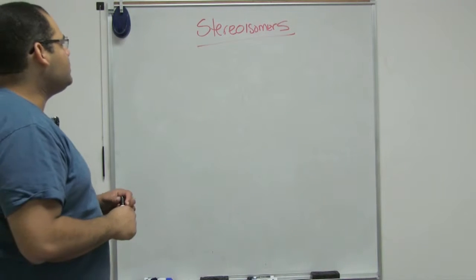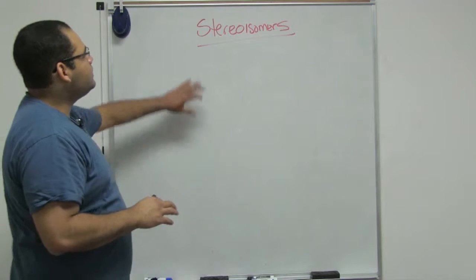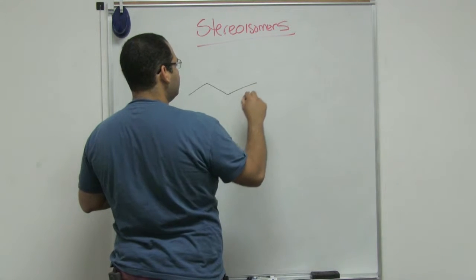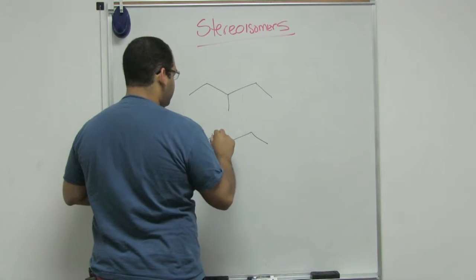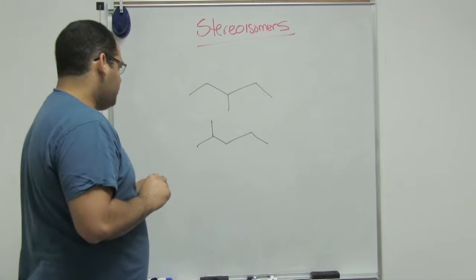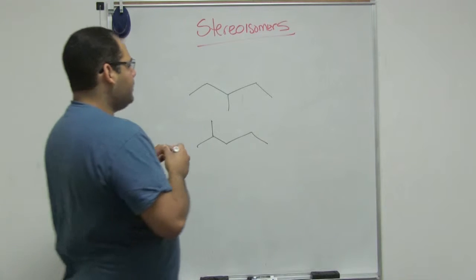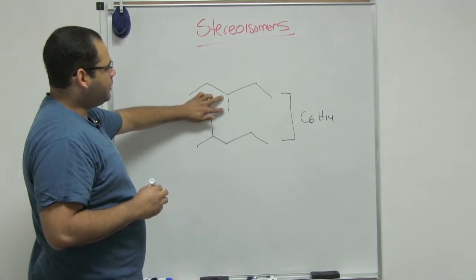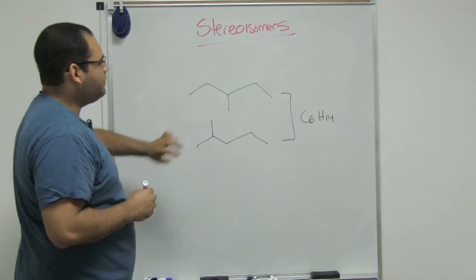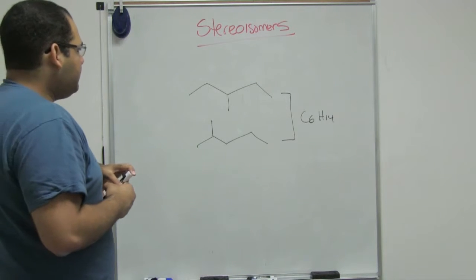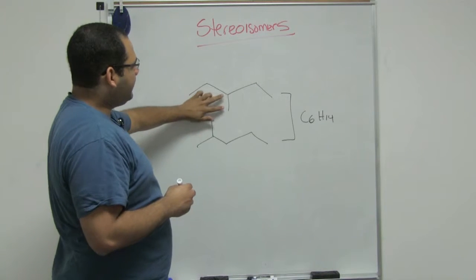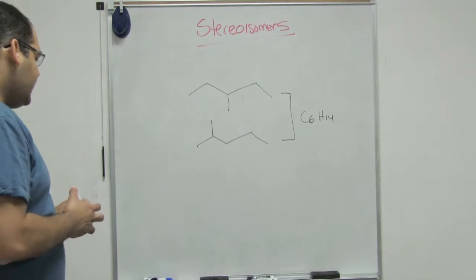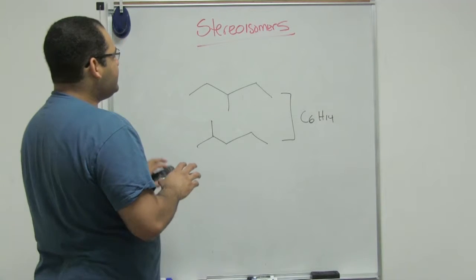In this video we're going to learn a little bit about stereoisomers. Before we go into this particular topic, I wanted to review what a constitutional isomer means. We have 3-methylpentane and 2-methylpentane — both have the same molecular formula C6H14, however the connectivity is placed at a different carbon. Constitutional isomers have the same molecular formula but different connectivity.